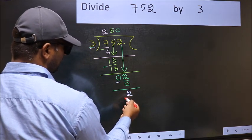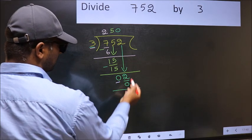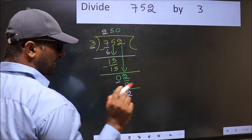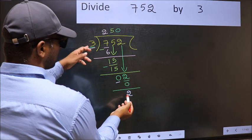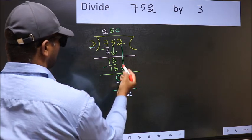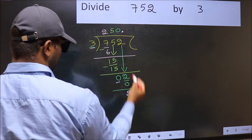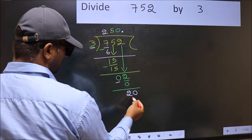Over here, we did not bring any number down. And 2 is smaller than 3. So, now you can put a dot and take 0. So, 20.